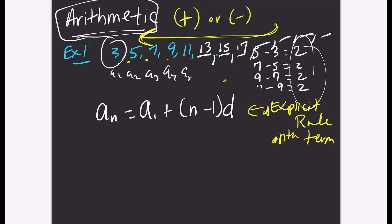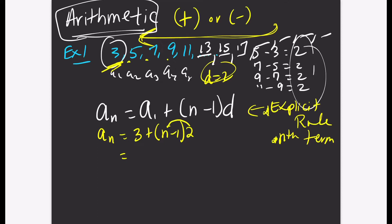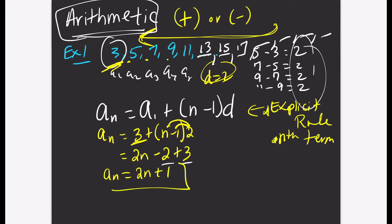Let's go ahead and find the explicit rule. A sub n equals a sub 1, which is 3, plus n minus 1 times d, which is 2. Let's simplify: distribute the 2 to everything inside the parentheses — 2 times n is 2n, 2 times negative 1 is minus 2 — and bring down the positive 3. Combine like terms: bring down 2n, and negative 2 plus 3 is 1. So here is our simplified explicit rule: a sub n equals 2n plus 1.